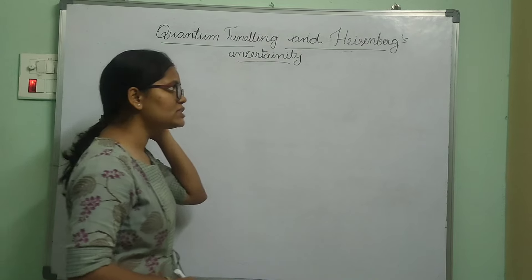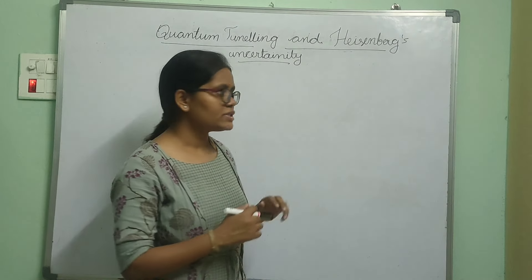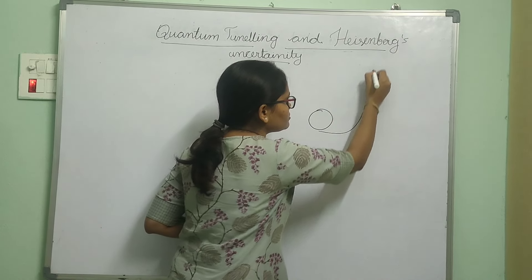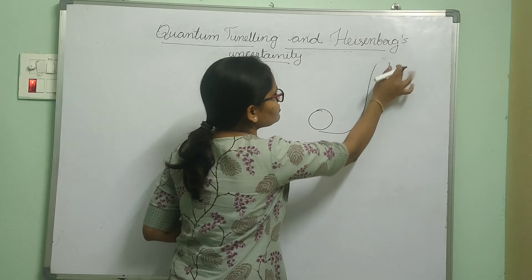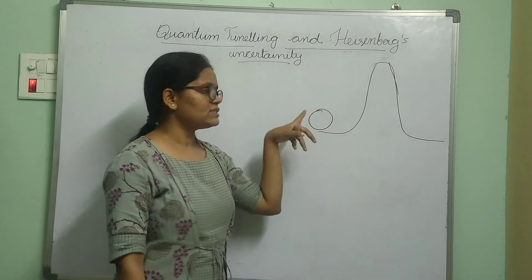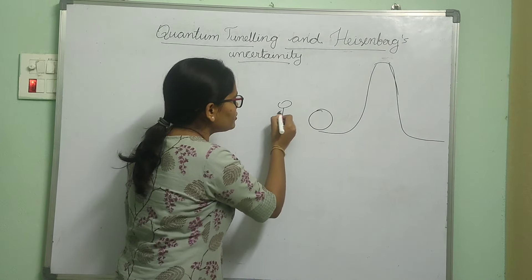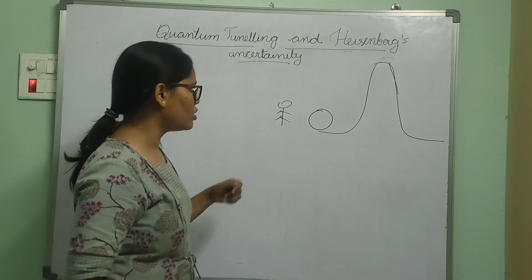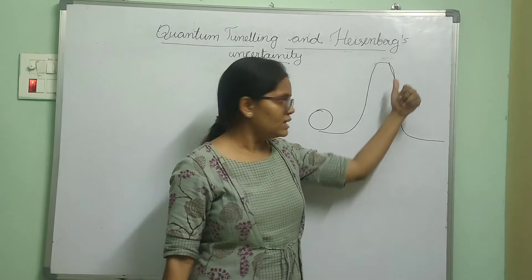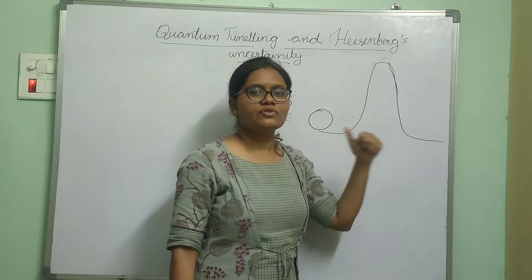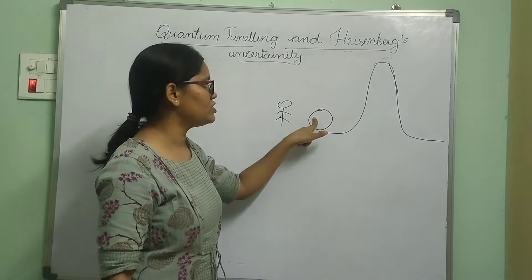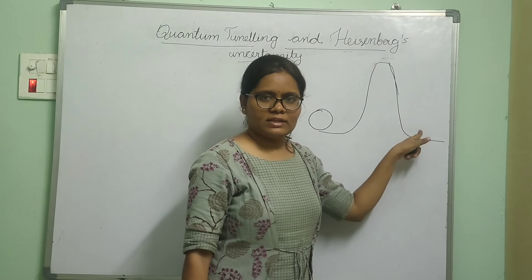We will try to understand quantum tunneling using a classical example of a ball and a hill. This is a hill and this is a ball — you can consider it as your favorite ball, a cricket ball or a football. You want this ball to surpass this hill and appear on the other side. When will it happen? It will happen only when this ball has sufficient energy to cross this hill.